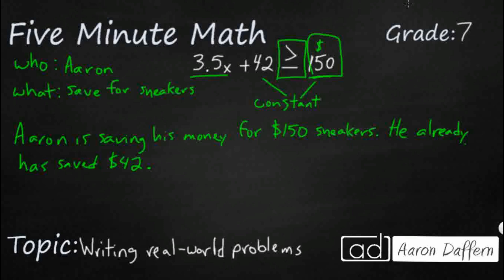So this 3.5x, right? So obviously x is our variable and I'm just going to kind of go with allowance. That's an easy one. So x will be the number of weeks. And so this is going to be my coefficient, which is what I am multiplying my variable by.